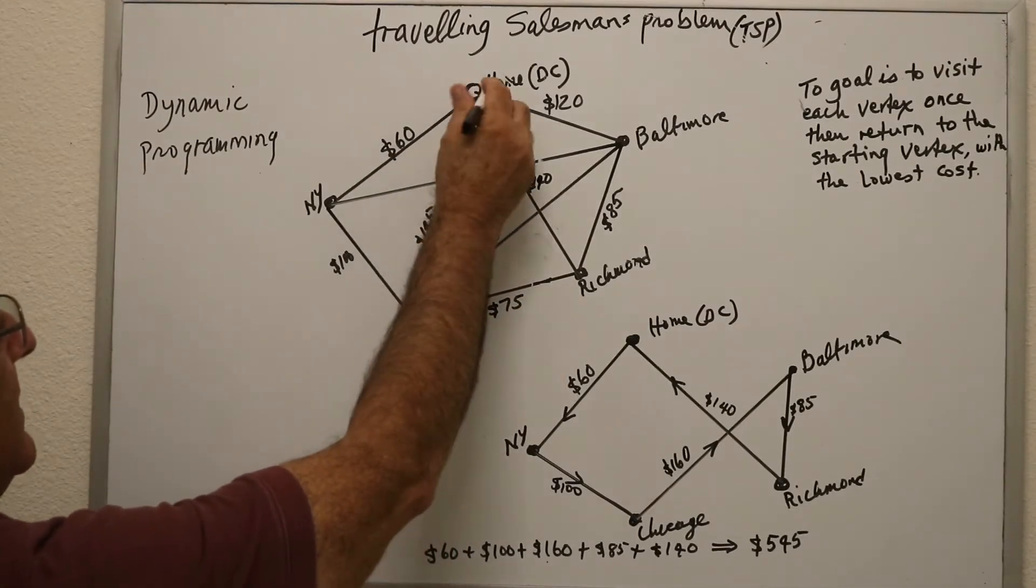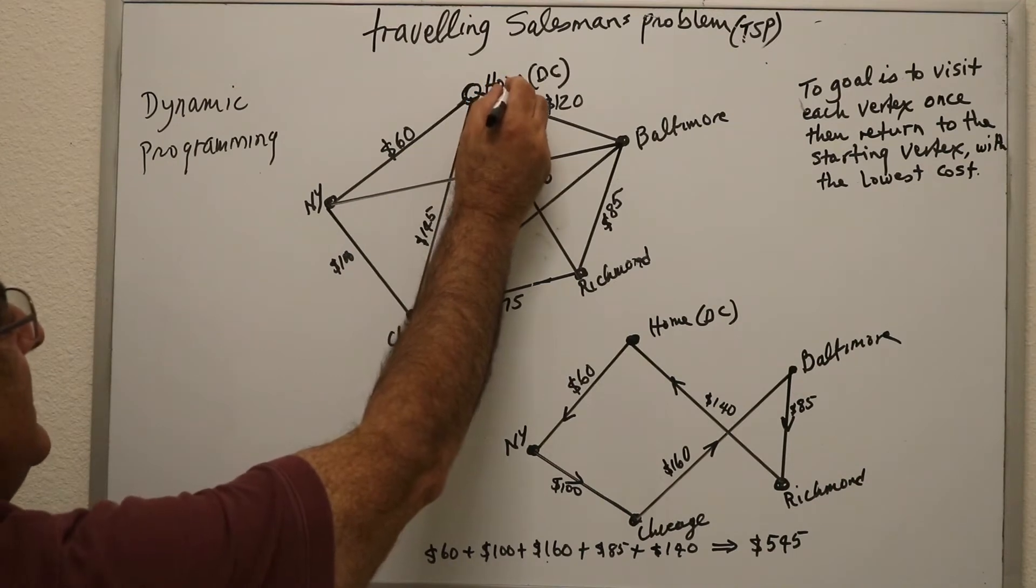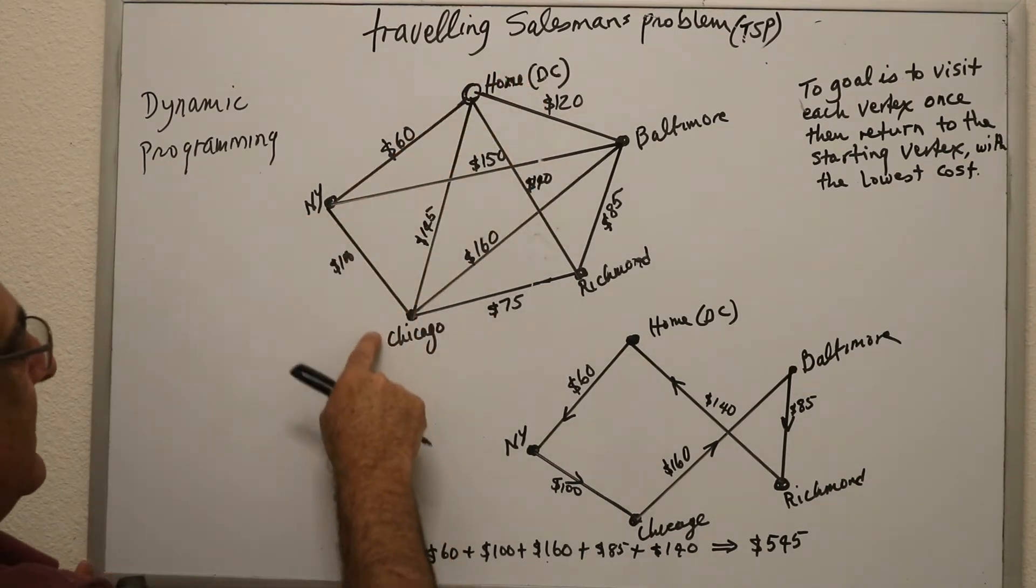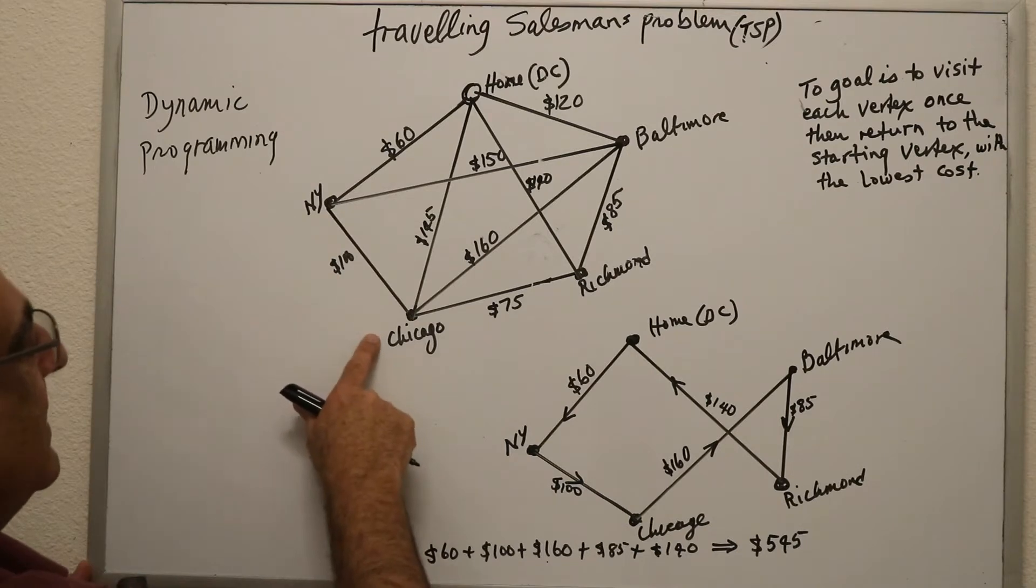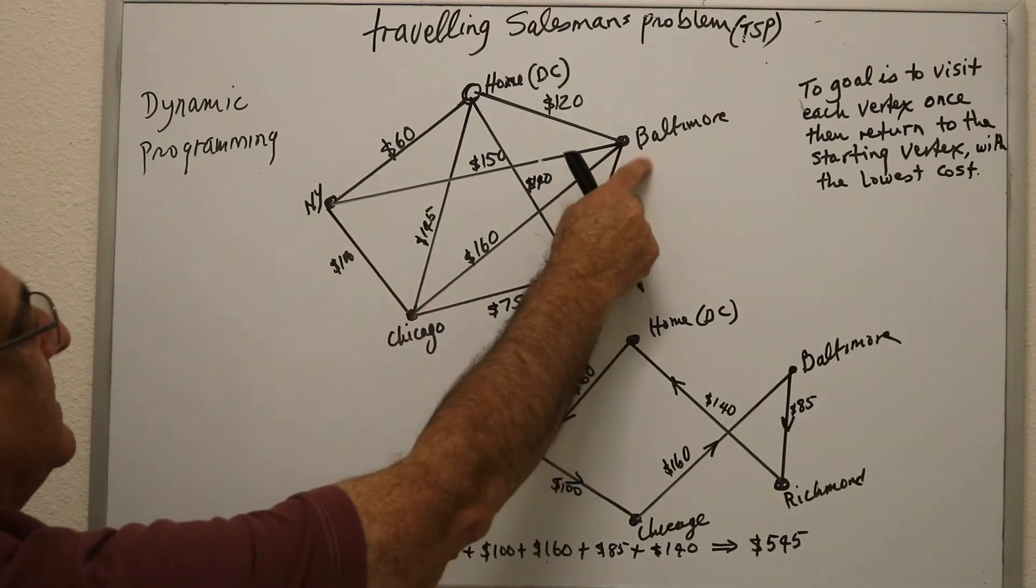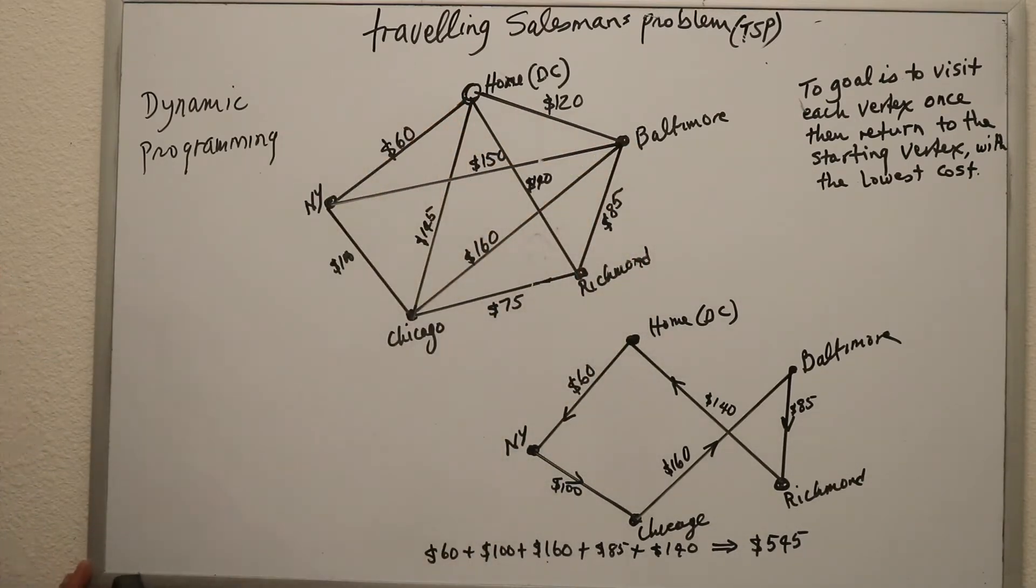You start with say the home here, say Washington DC. You can go to New York, you got to visit all these cities: New York, Chicago, Richmond, Baltimore, and end up in DC.